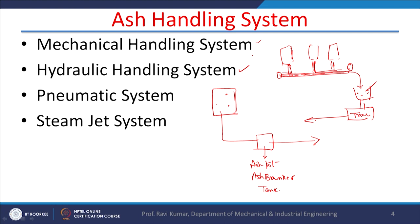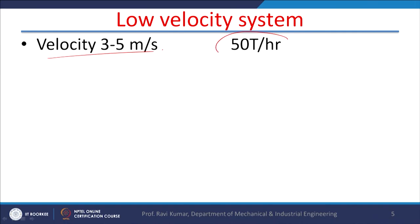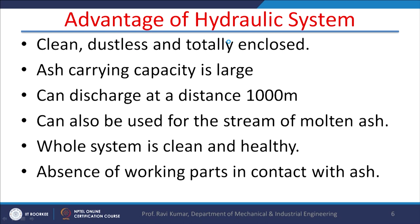There are pneumatic systems also, where ash is removed under pressurized air. There are steam jet systems where steam is injected on the ash, making a slurry which is then removed from the thermal power plant. These are all low velocity systems, and the mechanical type can remove up to 5 tons of ash per hour — that is a limitation of the mechanical ash handling system.